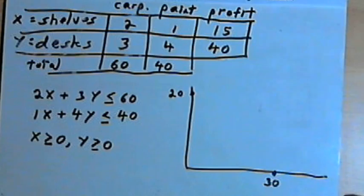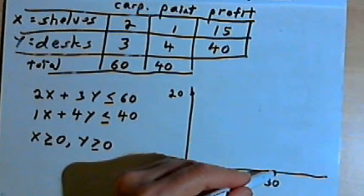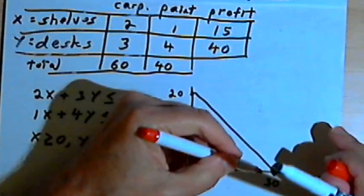So I've got the x-intercept for the first inequality. I'll just connect those with a line. And let's shade underneath that.